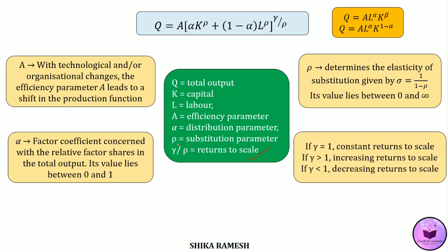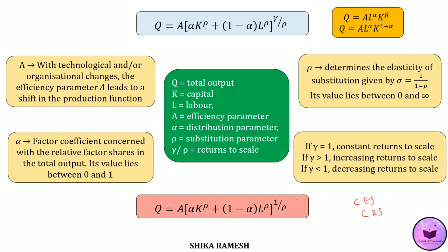The last parameter is gamma by rho, which represents returns to scale — it depends upon the value of gamma. If gamma equals 1, we have constant returns to scale. If gamma is greater than 1, then increasing returns to scale. And if gamma is less than 1, then decreasing returns to scale. The general form of a CES production function with constant returns to scale can be written as Q = A × (α·K^ρ + (1−α)·L^ρ)^(1/ρ). Since gamma equals 1, this production function implies constant returns to scale.